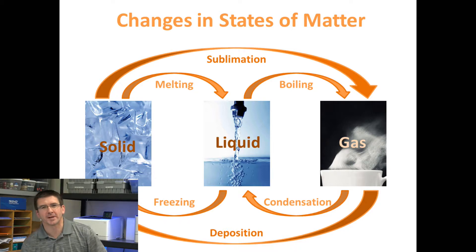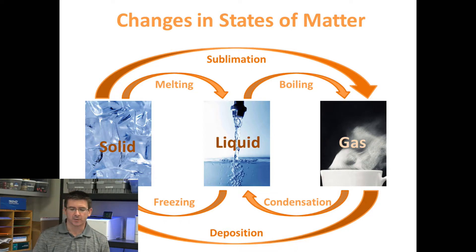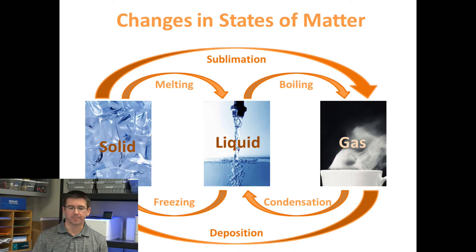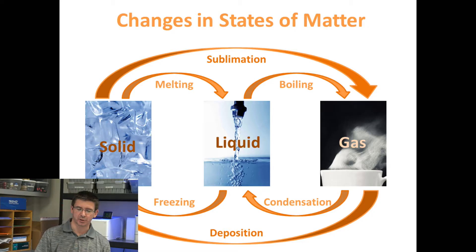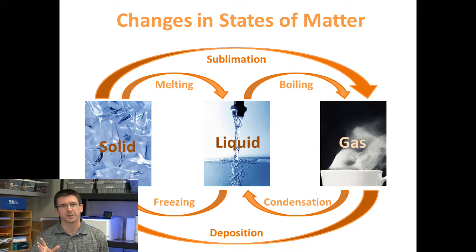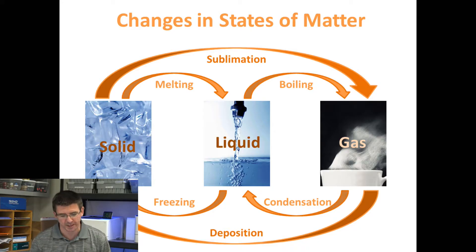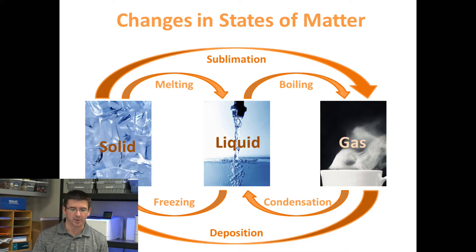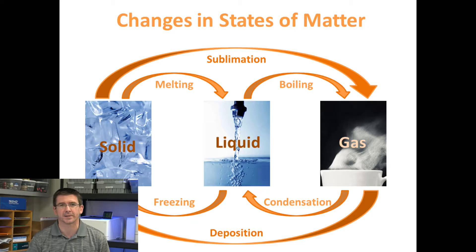It is important to understand all these different changes that can occur in matter from heating or cooling. Of course, going from a solid to a liquid we call it melting; liquid to a gas, it's boiling; gas back to a liquid, condensation; liquid to a solid, freezing. And then you've got a few cases in matter where it can actually skip a step — it can go directly from a solid to a gas like dry ice does. We call that sublimation. Going from a gas directly back to a solid is deposition.